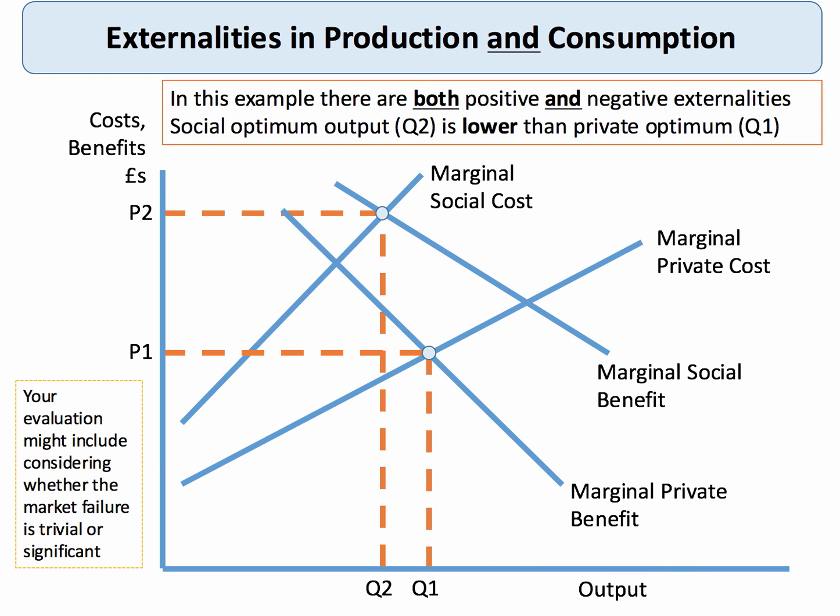Here's an example where we put together two aspects — quite a complicated diagram. We're assuming there are some positive externalities from consumption but some negative externalities from production. The marginal social benefit lies above the marginal private benefit, but the marginal social cost also lies above the private cost. In that example, if we think about both the positive and the negative externalities, the social optimum output is probably just a little bit to the left of the private optimum, Q1. For instance, there are positive externalities from consumption, but there could be significant pollution effects in supplying the good or service.